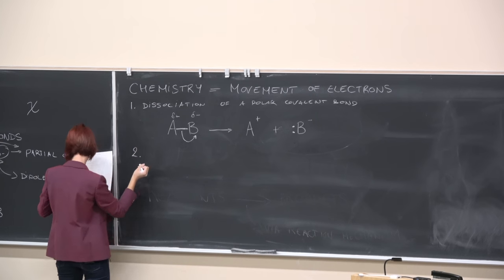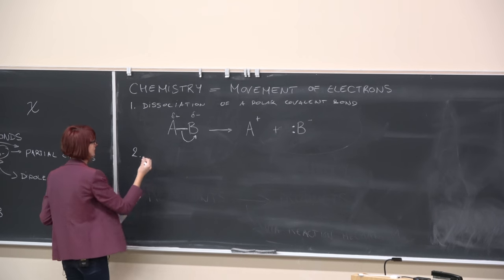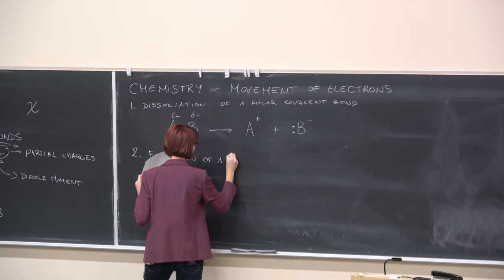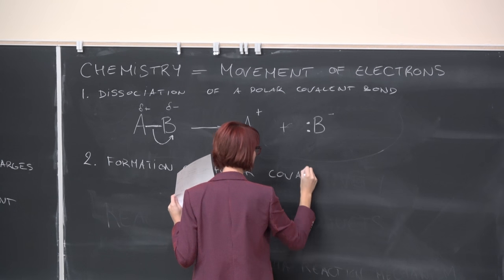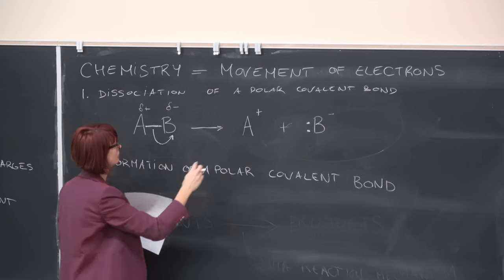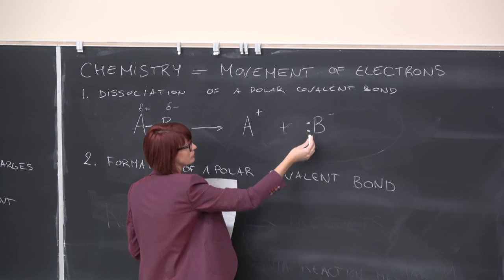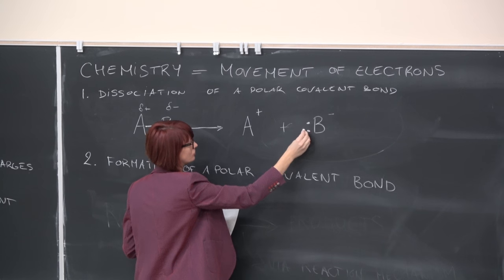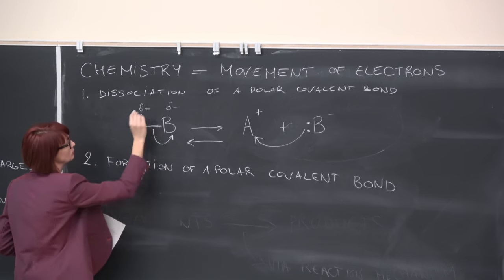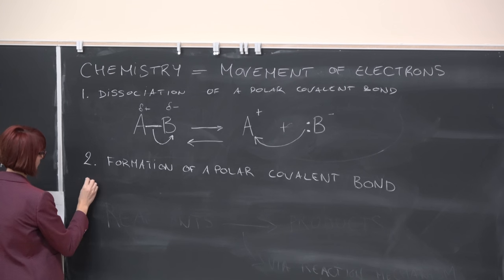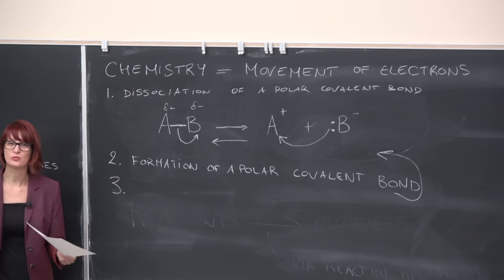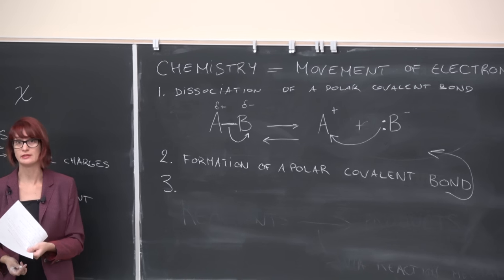Then you can have the formation of a polar covalent bond, which is essentially the reverse mechanism. You have electrons here attracted to the positive A plus atom, so the reaction goes the other way and you re-form the AB bond. Third, you can have a bond forming in one species and dissociating in another simultaneously — a simultaneous formation and dissociation.